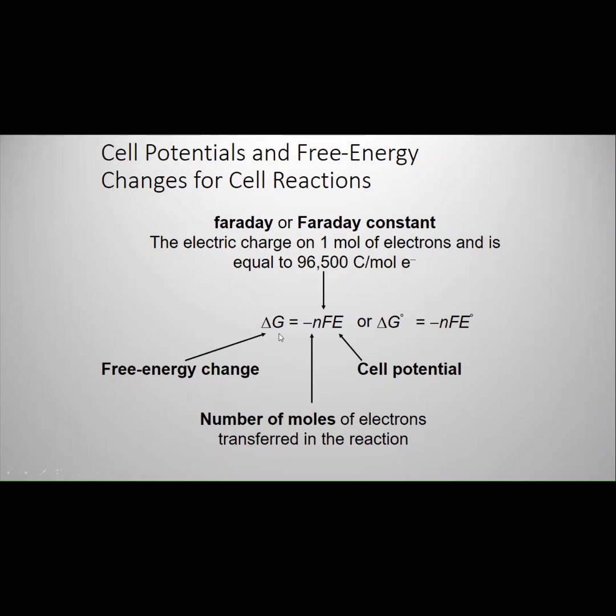In electrochemistry, free energy is equal to negative n, which is the number of moles of electrons transferred, times Faraday constant times the cell potential, which you already know how to determine as cathode minus anode.